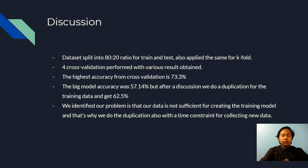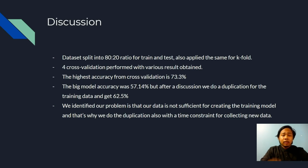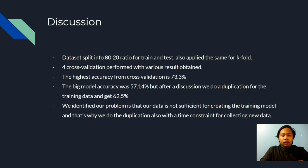Assalamualaikum. For the discussion part, first of all, we split the dataset into an 80-20 ratio for train and test data. We also applied the same ratio for the K-fold cross-validation, and we obtained various results. The highest accuracy from cross-validation is 73.3%. The big model accuracy was initially 57.14%, which was not enough for prediction — the minimum requirement being 60%. After discussion with the lecturer and our team, we performed data duplication for the training data and achieved 62.5% accuracy. We identified that our problem was insufficient data for the training model. We did data duplication because of time constraints in collecting new data.